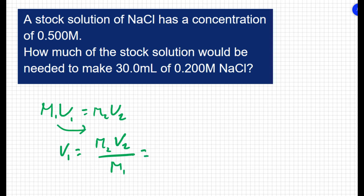So my final concentration is going to be 0.2 molar. My final volume is going to be 30 milliliters. And my initial concentration was 0.5 molar. Cancel out the molarity, and that's going to give me milliliters as a unit.